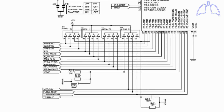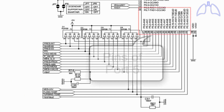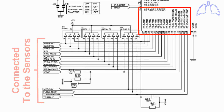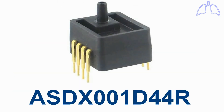The pins of port 5 are the analog input channels of the analog to digital converter. This is a part of the Medtronic PB560 CPU circuit schematic, and these are the pins of port 5. These pins are connected to the sensors. In Medtronic PB560, we use ASDX001D44R for pressure sensors.